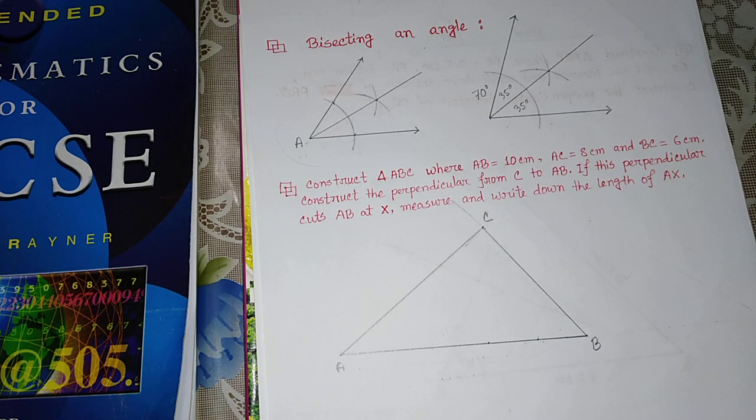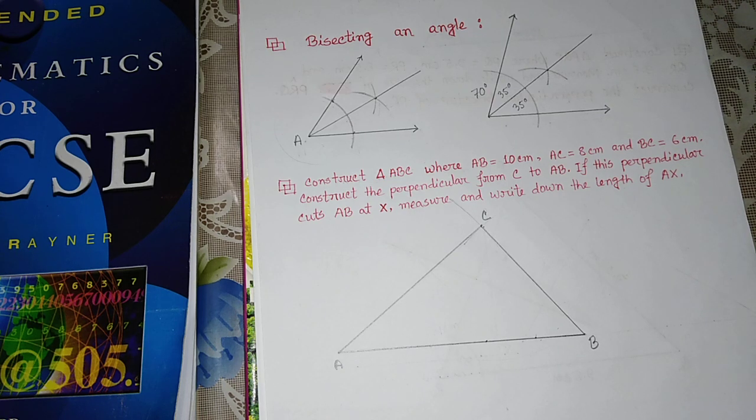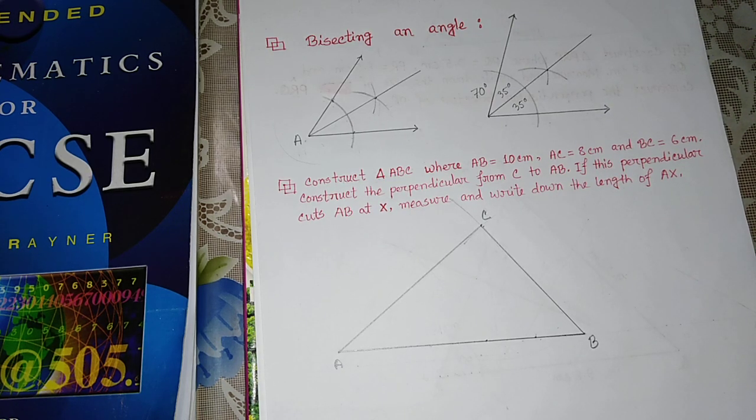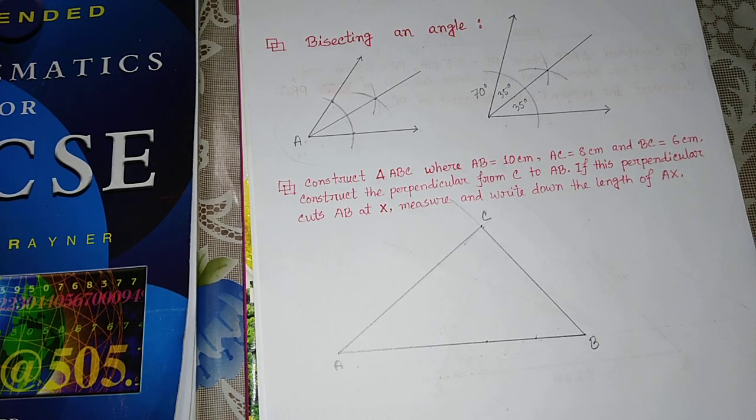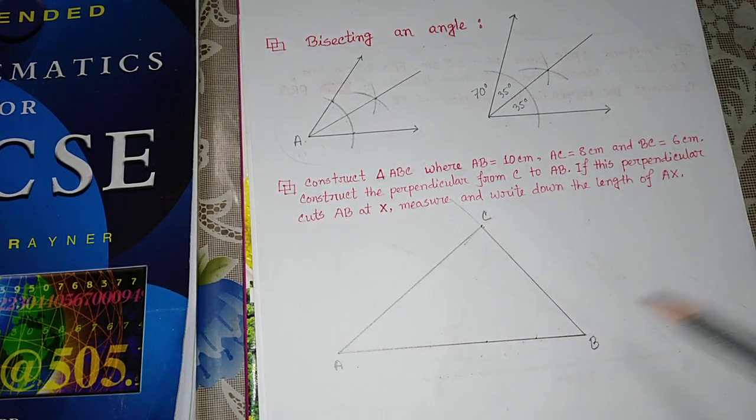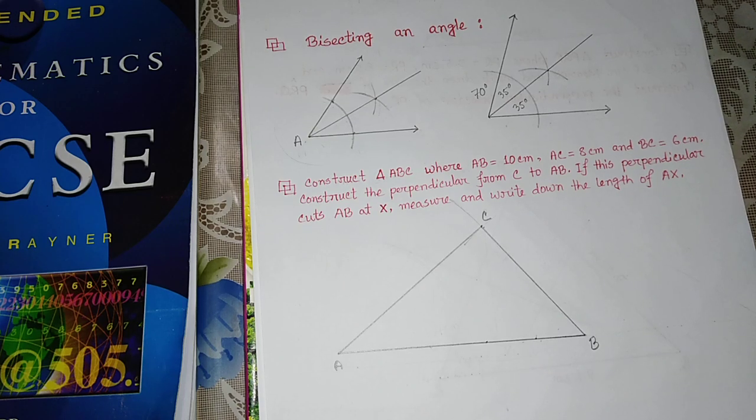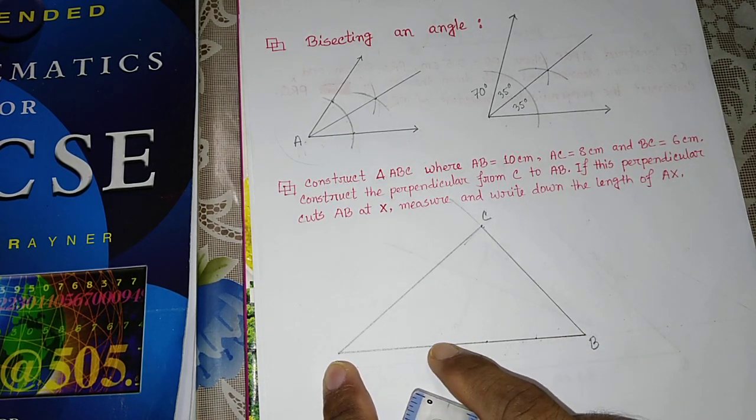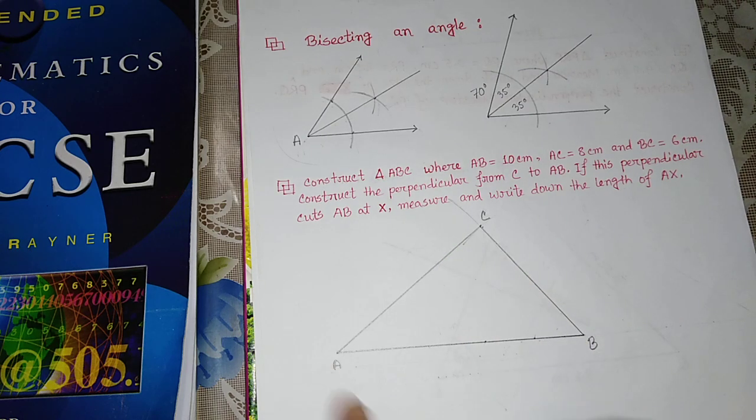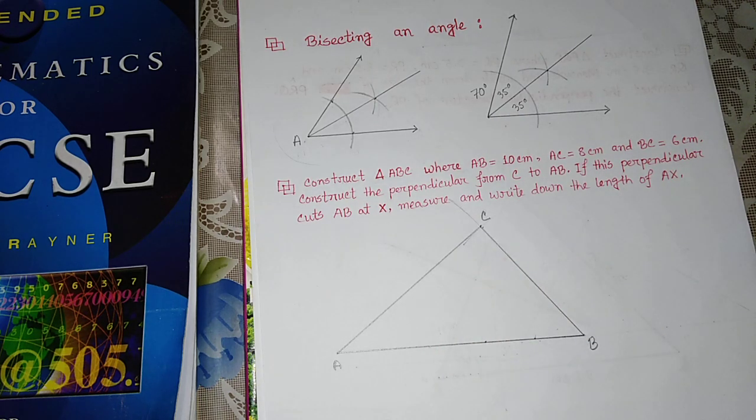First of all, we will draw triangle ABC. The second instruction is to construct the perpendicular from C to AB. That means C is a point, AB is a line. When we draw from C to AB, we take the radius and draw an arc. We draw arcs that are 50% of the length, then connect C. This will form a 90 degree angle.